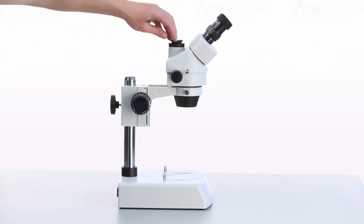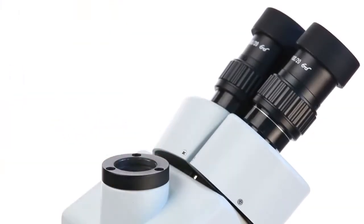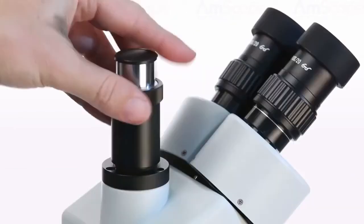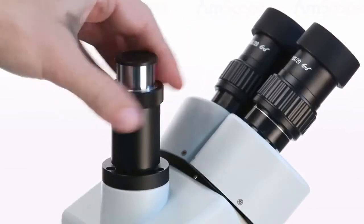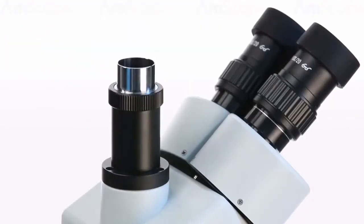Now we'll attach the trinocular viewing port. Start by unscrewing the viewing port's dust cap. Then screw the trinocular port into the threaded opening. To attach a camera, simply remove the port's dust cap.